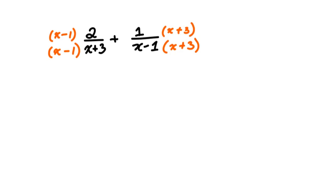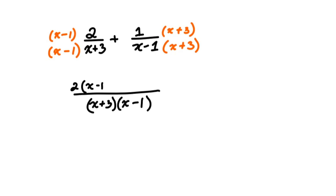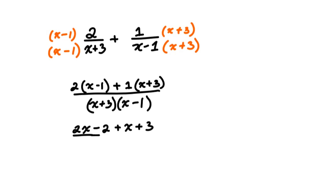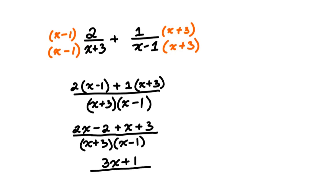Now let's simplify. The common denominator is x plus 3 times x minus 1. In the numerator, we have 2 times x minus 1, plus 1 times x plus 3. We're going to keep the denominator in factored form and expand and simplify the numerator using the distributive property. That gives us 2x minus 2 plus x plus 3, all over x plus 3 times x minus 1. Collecting like terms: 2x plus x gives 3x, and negative 2 plus 3 gives 1. So we get 3x plus 1, all over x plus 3 times x minus 1.